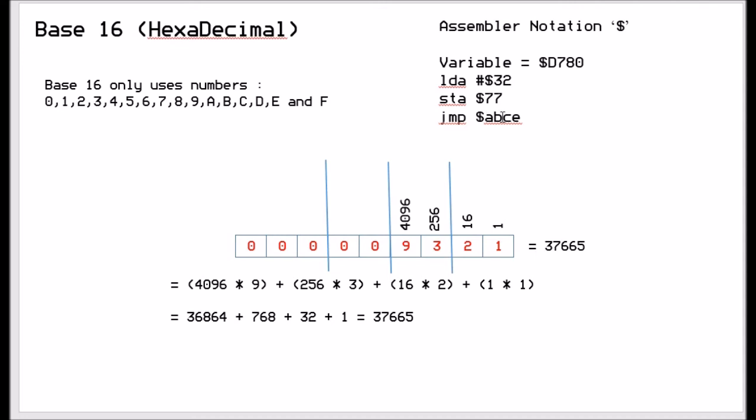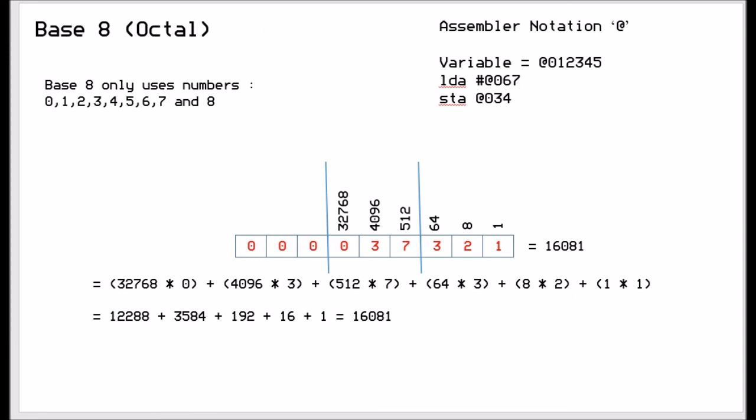And then the last base is not as used as often as binary and hexadecimal. It's called octal, and that is where you can store numbers using the numbers from 0 to 7, which is 8 numbers.